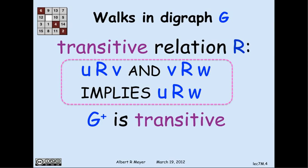Another way to say transitivity is to read u r v as meaning there's an edge from u to v. Then transitivity says that if there's an edge from u to v and an edge from v to w, there's an edge from u to w — in other words, if there's a path of length 2, there's a path of length 1. By easy induction, if there's a path of any positive length between two vertices, there's an edge between them.